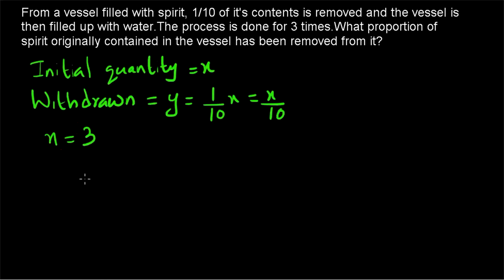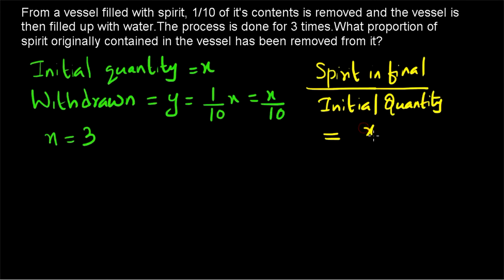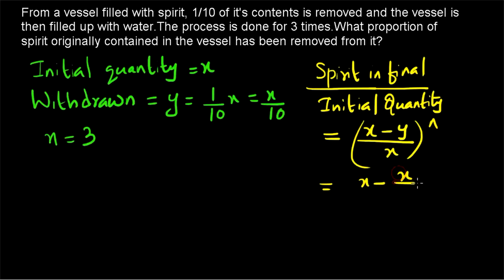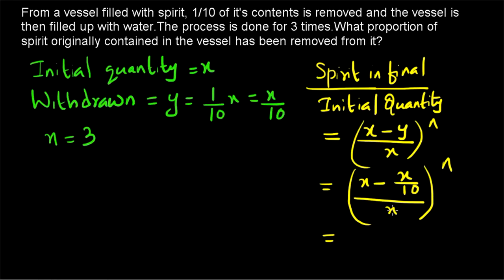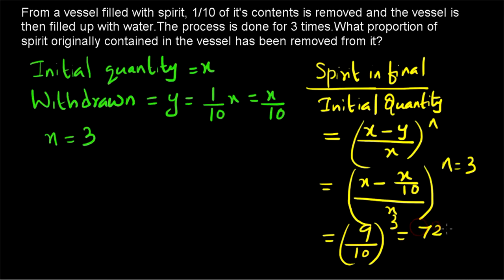Using the shortcut formula — final mixture to initial quantity equals (x minus y) by x raised to n — and substituting y equals x by 10, we get (x minus x/10) by x, raised to the power 3. The x terms cancel, giving (9x/10) by x, which simplifies to (9 by 10) cubed, equal to 729 by 1000. This is the proportion of spirit remaining in the final mixture.